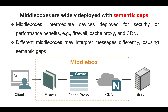The internet has become a complex distributed network with numerous middleboxes, such as firewall, cache proxy, and CDN. Different middleboxes may interpret messages differently, causing the semantic gap attack.